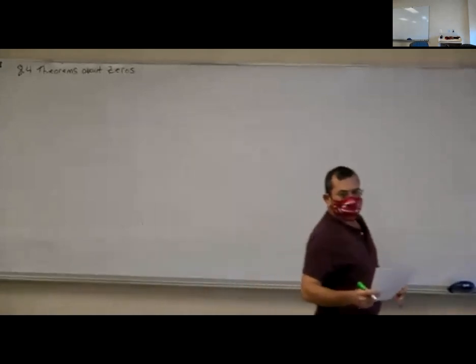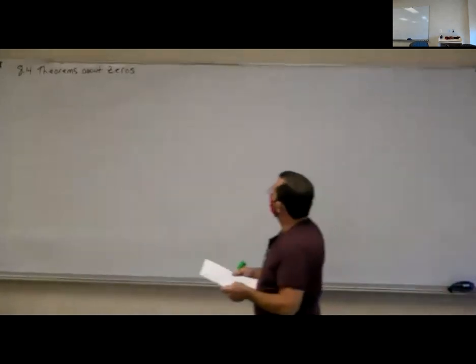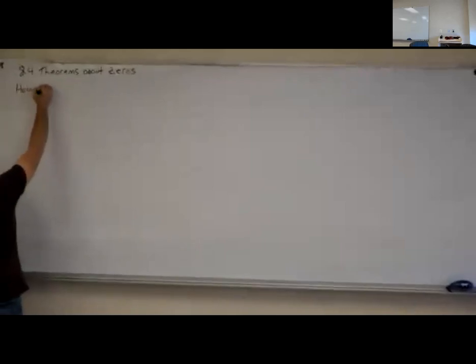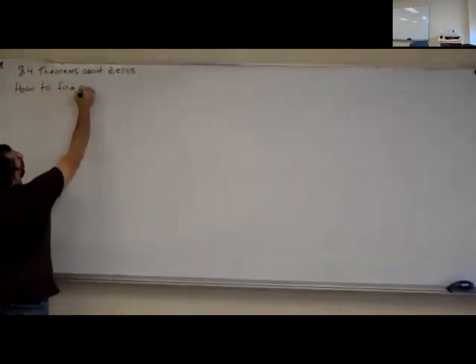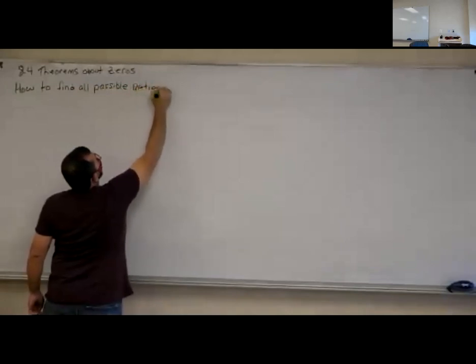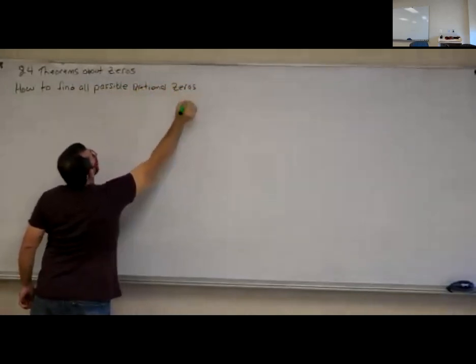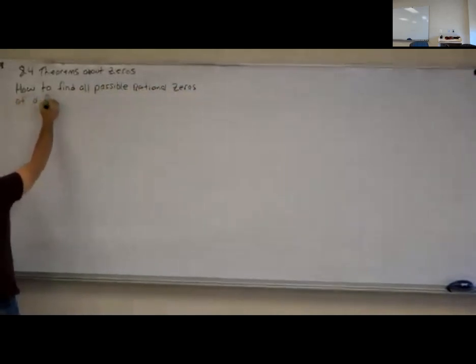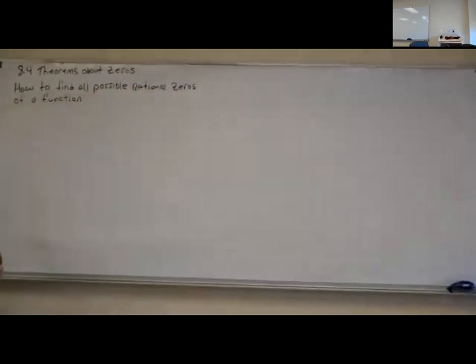All right, I'm picking up around your homework around number 14. So around 14 you start getting questions about finding all possible zeros of the function. I want to show you all how to find all possible zeros — and this would be possible rational zeros of a function. Because up to now they've been giving us some of the zeros and we would use synthetic division and work through it. So now they're not giving me any of the zeros and I've got to find them on my own.